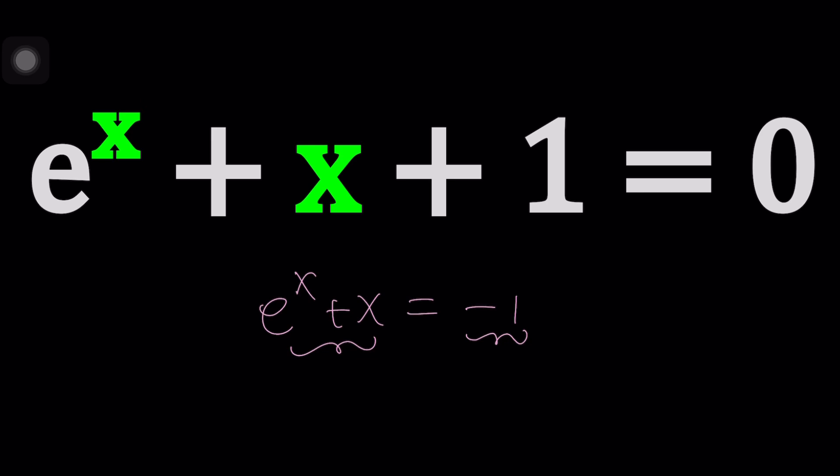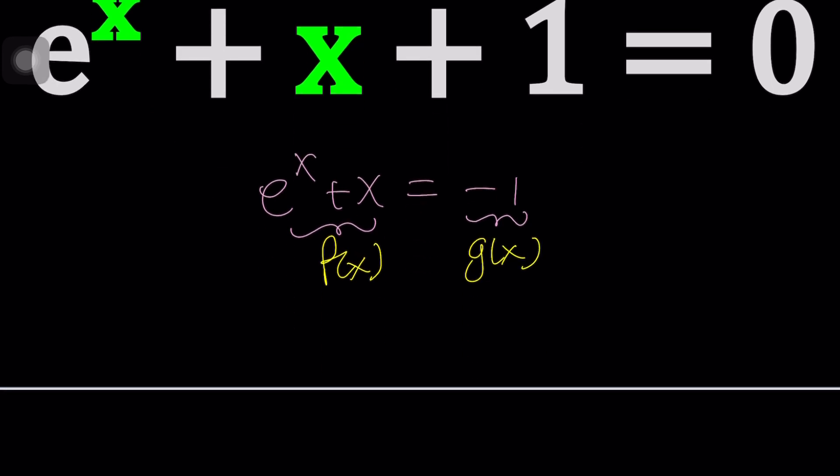Look at the left-hand side. Let's call this F of X and let's call this G of X. Look at F of X. What do you see? If you don't see what I'm talking about, let's go ahead and differentiate F of X. What's the derivative of E to the X plus X? The derivative of E to the power X is itself, which is a super-duper interesting function, right? Plus the derivative of X is 1.